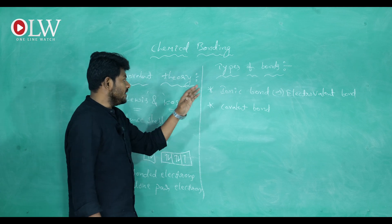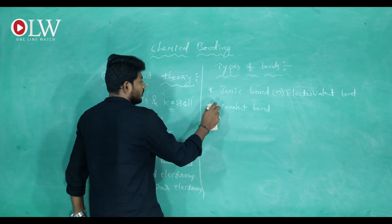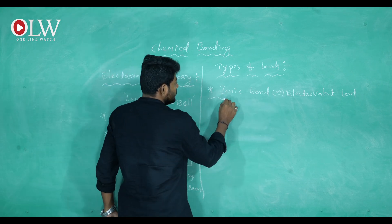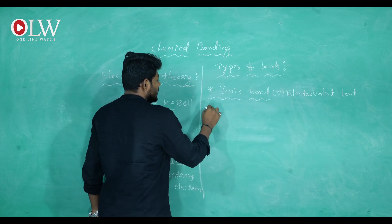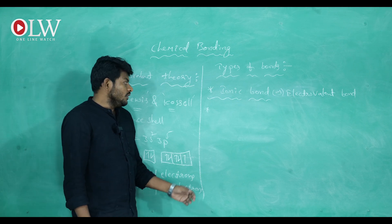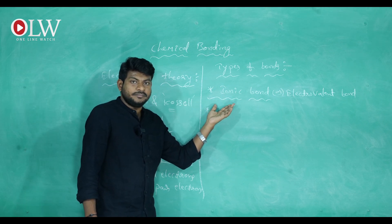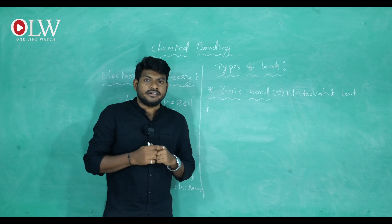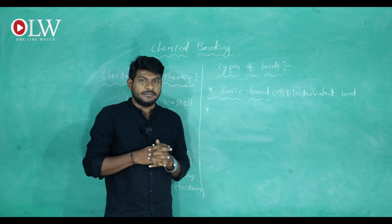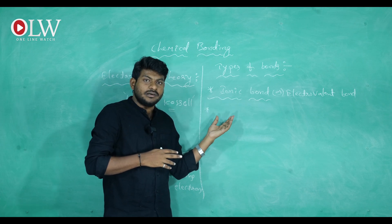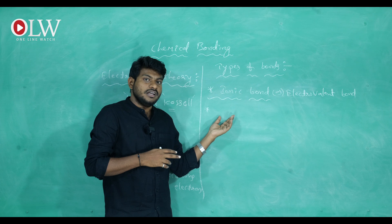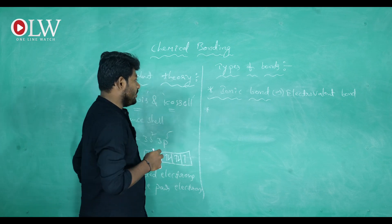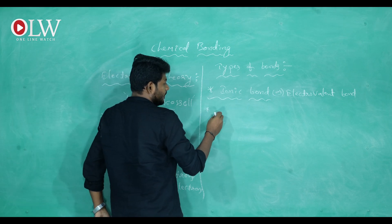Let's discuss the ionic bond first, then the covalent bond. How does the ionic bond form, and what are the rules? Any two elements, for getting stability, undergo transfer or sharing of electrons. The rules followed during this process determine the type of bond. For ionic bond, the first rule is that the two elements must have different charges.